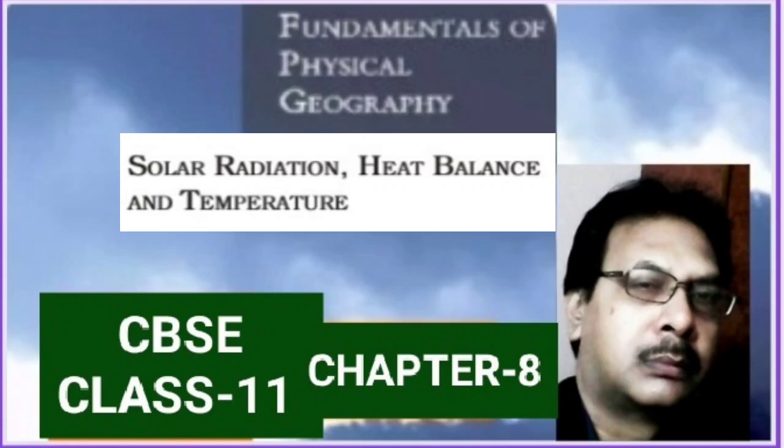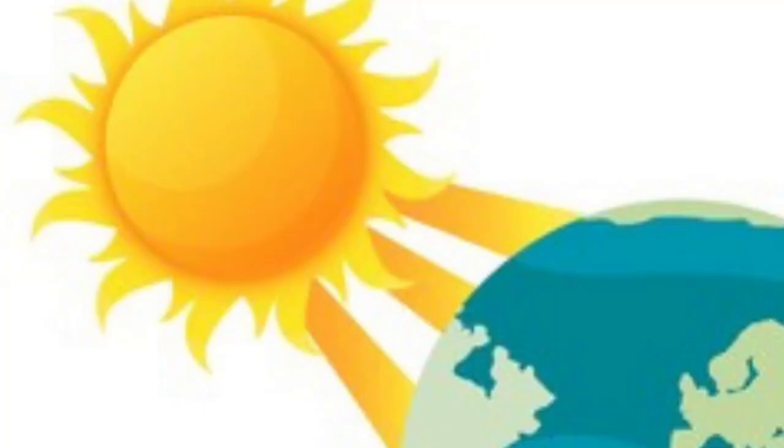We will be discussing in this topic about the process of heating and cooling of the atmosphere and the temperature distribution over the earth's surface. The source of heat and energy for the earth, as we all know, is the sun. The earth receives its energy from the sun by the process of radiation, which is in the form of short waves. This is called incoming solar radiation, or insolation.